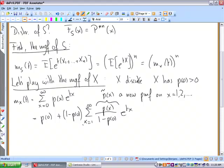This means here that what you have there is the mgf of a new random variable X tilde, which is the same as X except for the fact that you don't have a mass at zero.